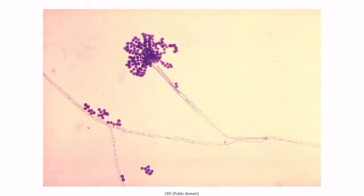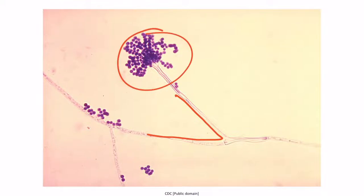This is an image of Aspergillus. Notice that there is a branch forming as a V-shape right here — approximately 45 degrees, referred to as an acute angle. You can also see little spores on the end of the hyphae right here.